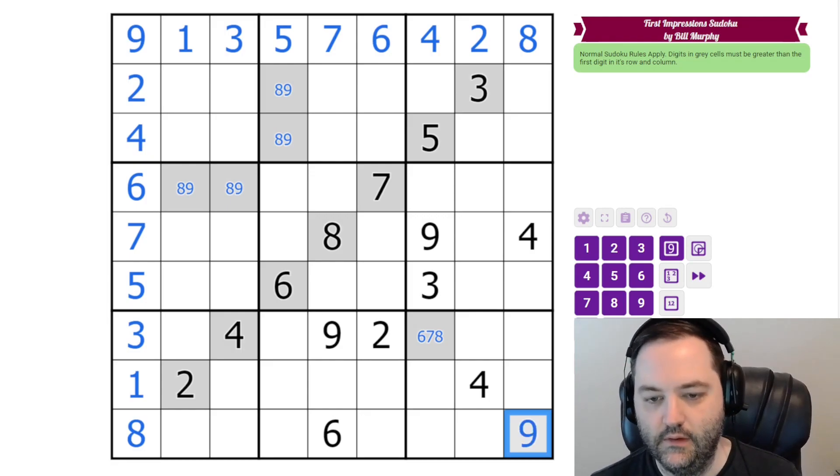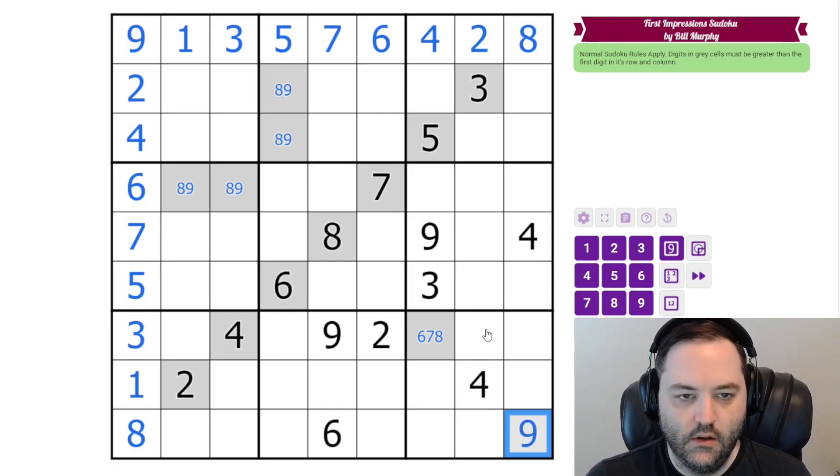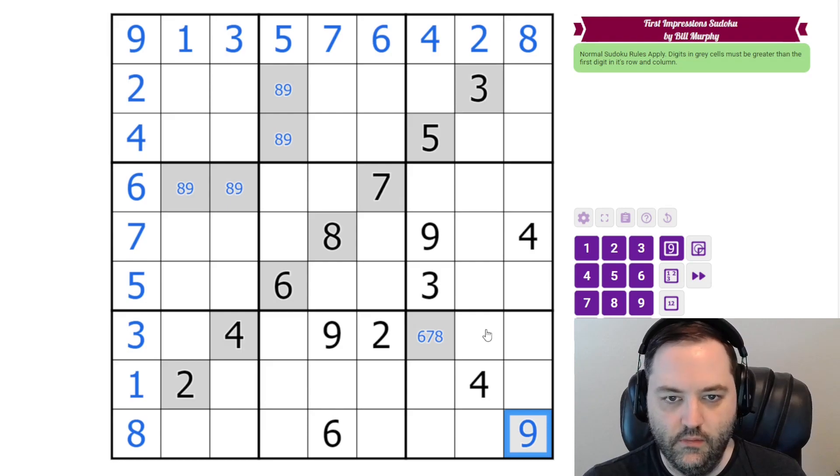And the only thing bigger than 8 is a 9. So that is all of our gray cells pretty much resolved, apart from not knowing what this is, and having some pairs. So now we can just do some Sudoku.